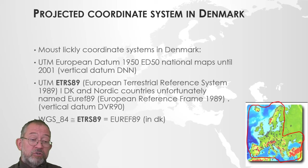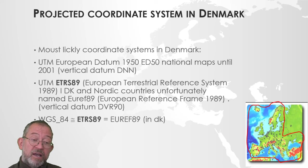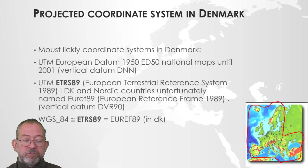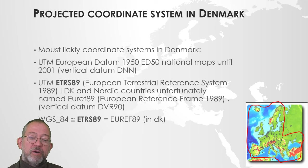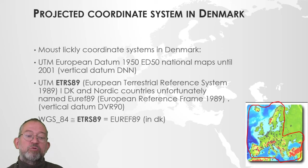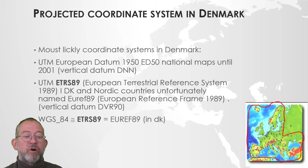Maps produced after year 2000 should be in UTM using the datum ETRS-89, European Terrestrial Reference System — a common European datum, similar to ED50, and an EU project. There was a period when Denmark and the Nordic countries were among the first to adopt this, and it was incorrectly called EUREF rather than ETRS. EUREF is now used for something completely different, which can cause some confusion.